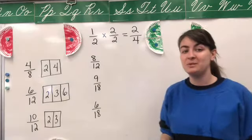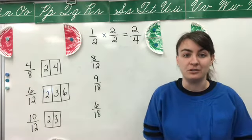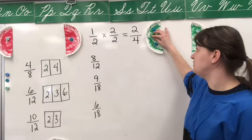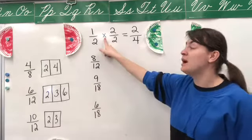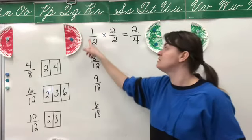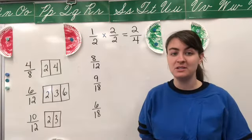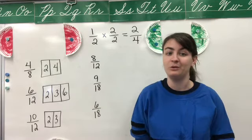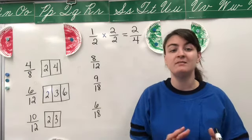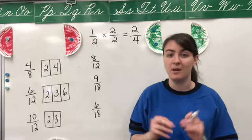What you're going to be doing today is reducing fractions. So we're going to take these larger fractions that we've made, and instead of multiplying, we're going to divide to make them smaller. You're going to be doing the exact opposite: when we find equivalent fractions, we multiply. Now to reduce fractions, we're going to divide, and these are opposites.